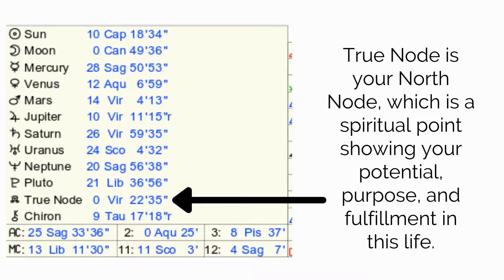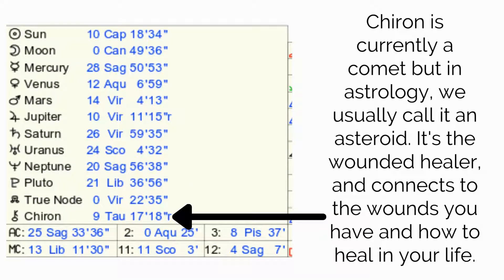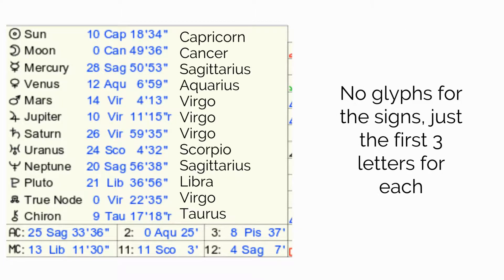Below the wheel on the left is a location of the 10 planets, as well as the True Node, Chiron, and six of the 12 houses. True Node is your North Node, which is a spiritual point showing your potential purpose and fulfillment in this life. This is not a physical body; it's the point in the Moon's orbit where the Moon crosses the ecliptic. Chiron is currently classified as a comet, but in astrology we usually call it an asteroid. It's the wounded healer and connects to the wounds you have and how to heal in your life.